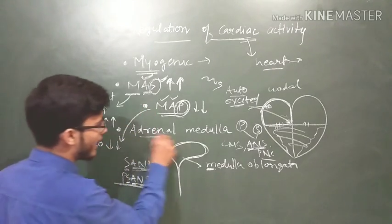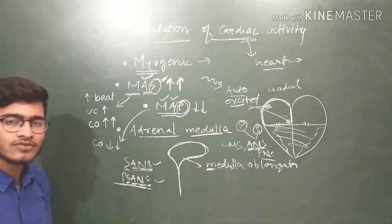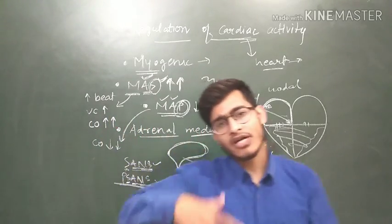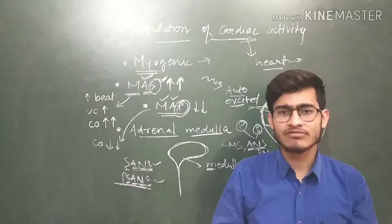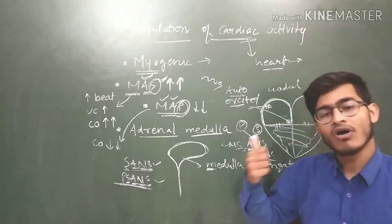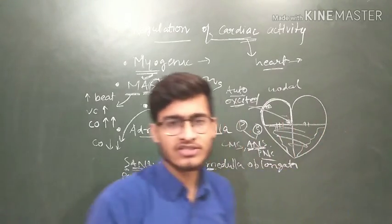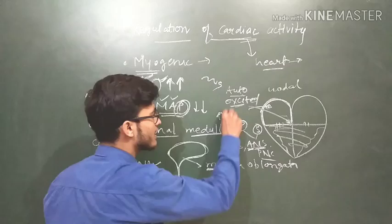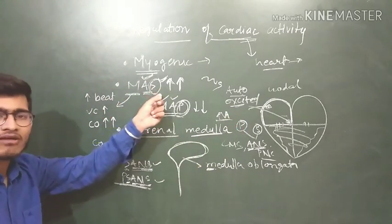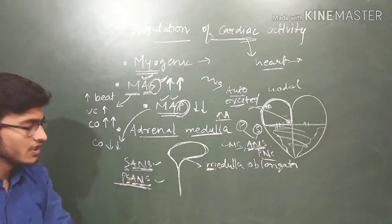Now, the adrenal medulla. Adrenal gland, in the adrenal gland there are two different regions. There is cortex, there is medulla. So, some hormones of medullary region will also influence the cardiac activity and they will increase the cardiac output just like the MASS is doing.